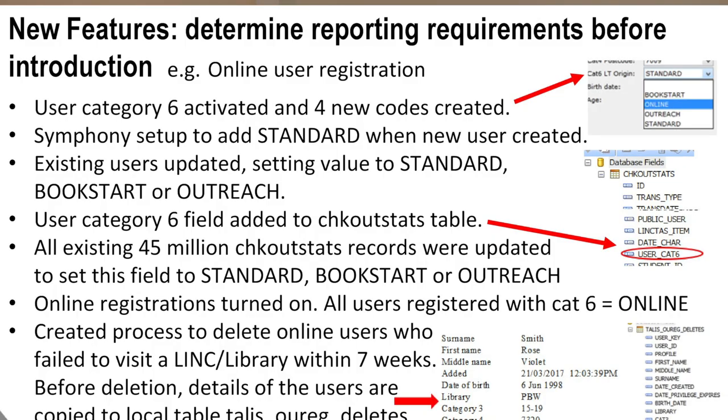You've also got to consider reporting requirements when you introduce new features. In August 2015, we turned on online user registration for Link Tasmania. Before we did that, we needed to know what the reporting requirements were — fairly obvious ones like how many people registered, but also how many people registered and were then deleted seven weeks later because they didn't come into a library to complete registration, and the profile of what these clients were borrowing and logging into. That was achieved by activating a new user category, adding it to the Checkout Stats table, updating 45 million checkout stats entries, turning on online user registration, and creating our own local table to copy user details into before finally deleting them from the database.